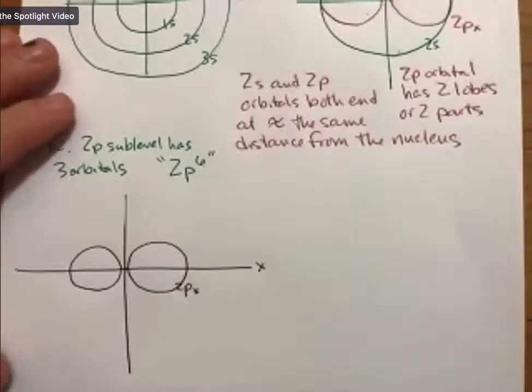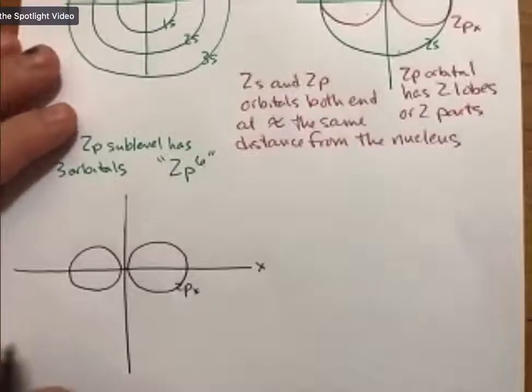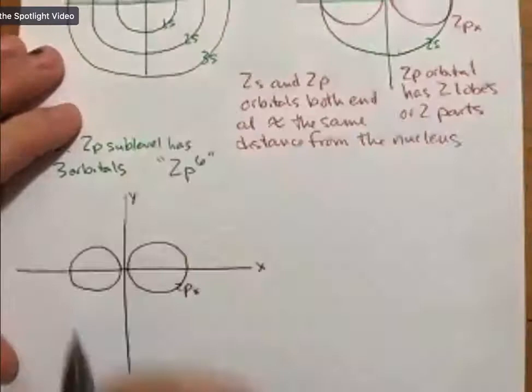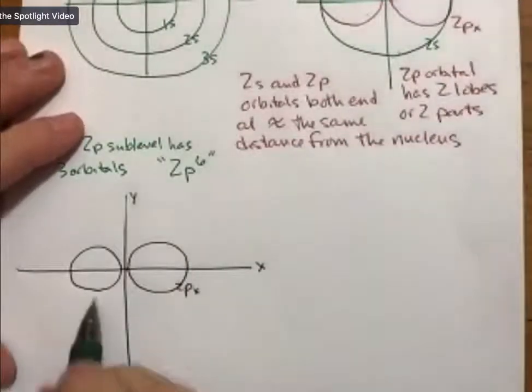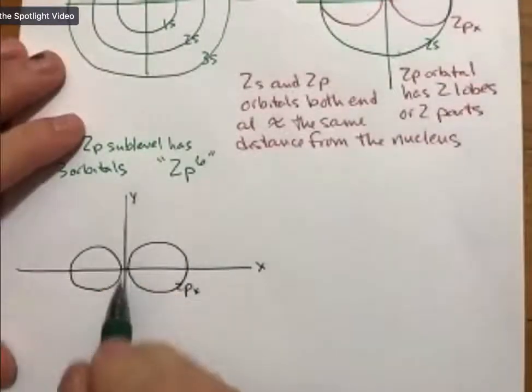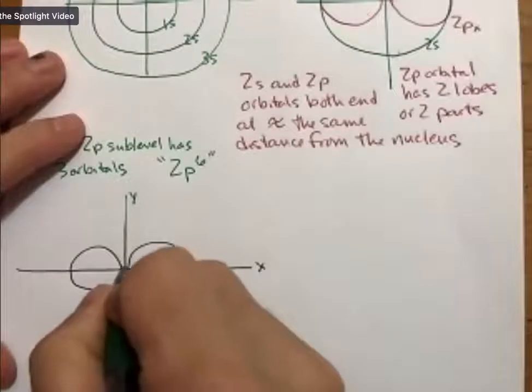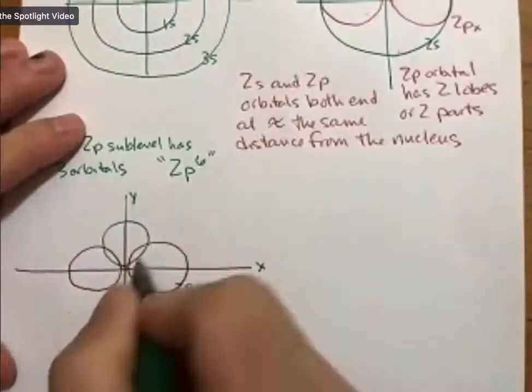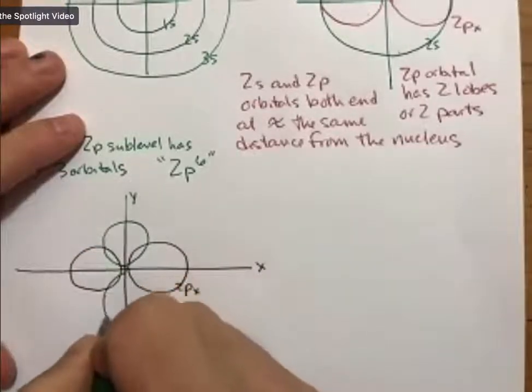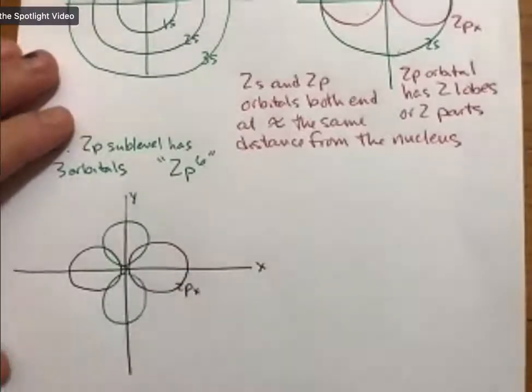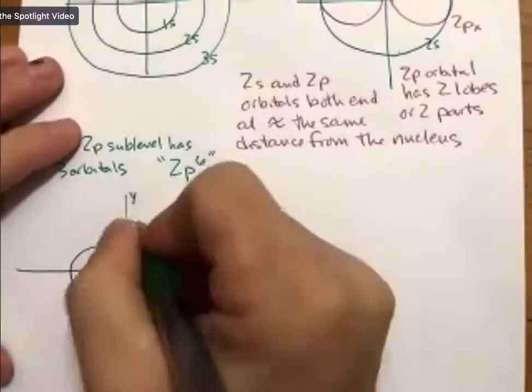Because I've defined this as the x-axis, the atom can't tell its x from its y from its z-axis, but we will assign a configuration. Now let's call this the y-axis, and for the y-axis these two shapes will be along the y-axis. They should be the same shapes. My attempts at drawing them may not be. So this is 2Py.